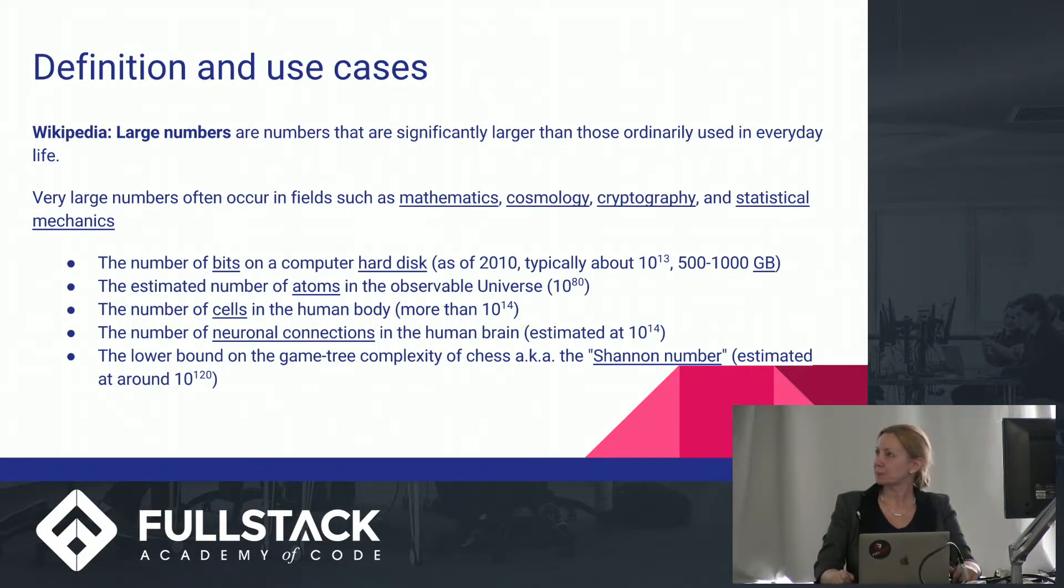So which numbers are exactly considered to be big? Wikipedia gives us the following definition: Large numbers are numbers that are significantly larger than those ordinarily used in everyday life. But from our JavaScript point of view, we consider numbers to be big if they are made of many digits before or after decimal points.